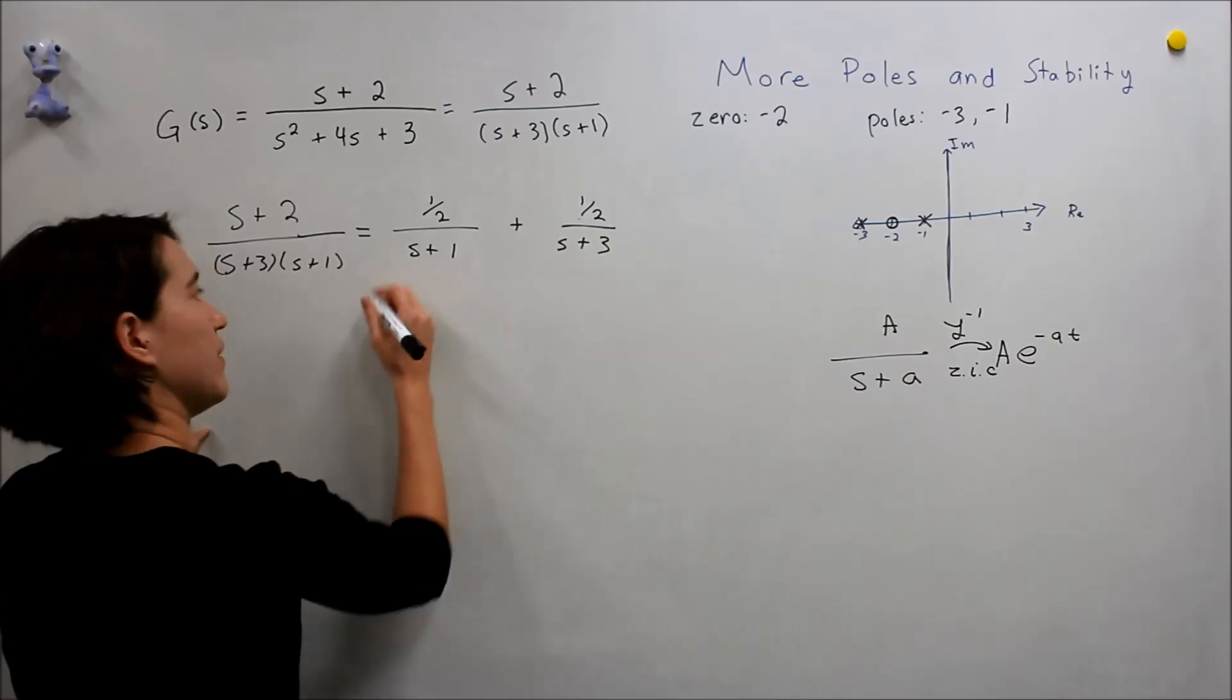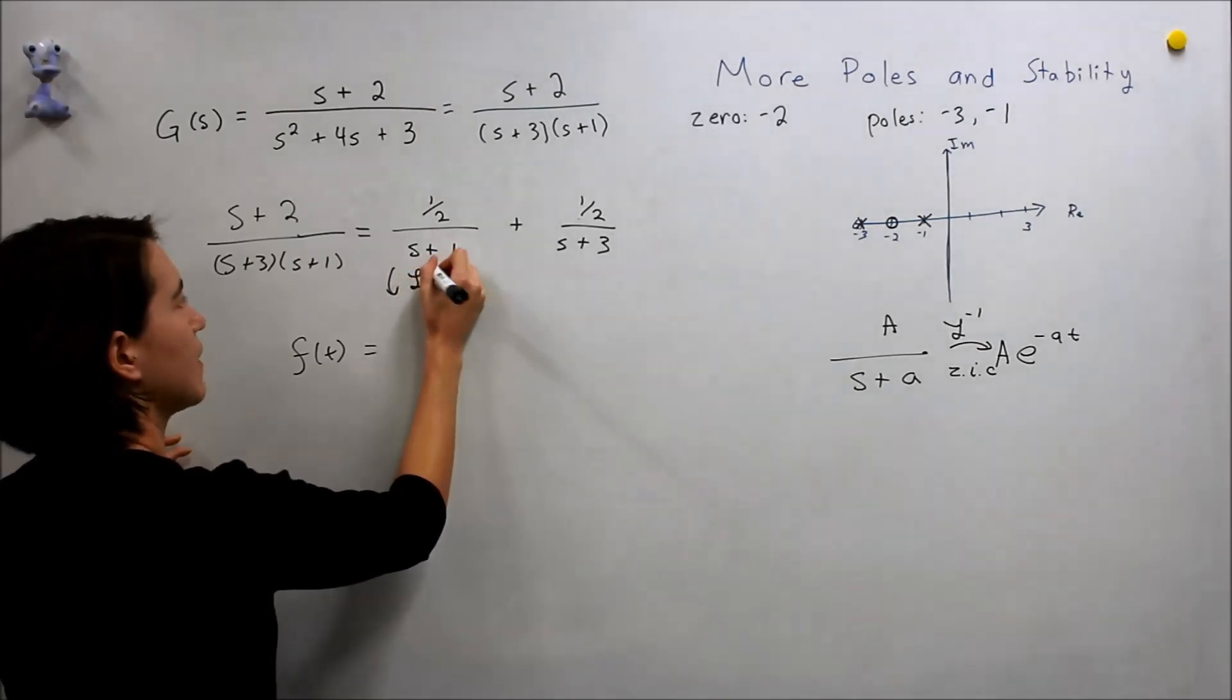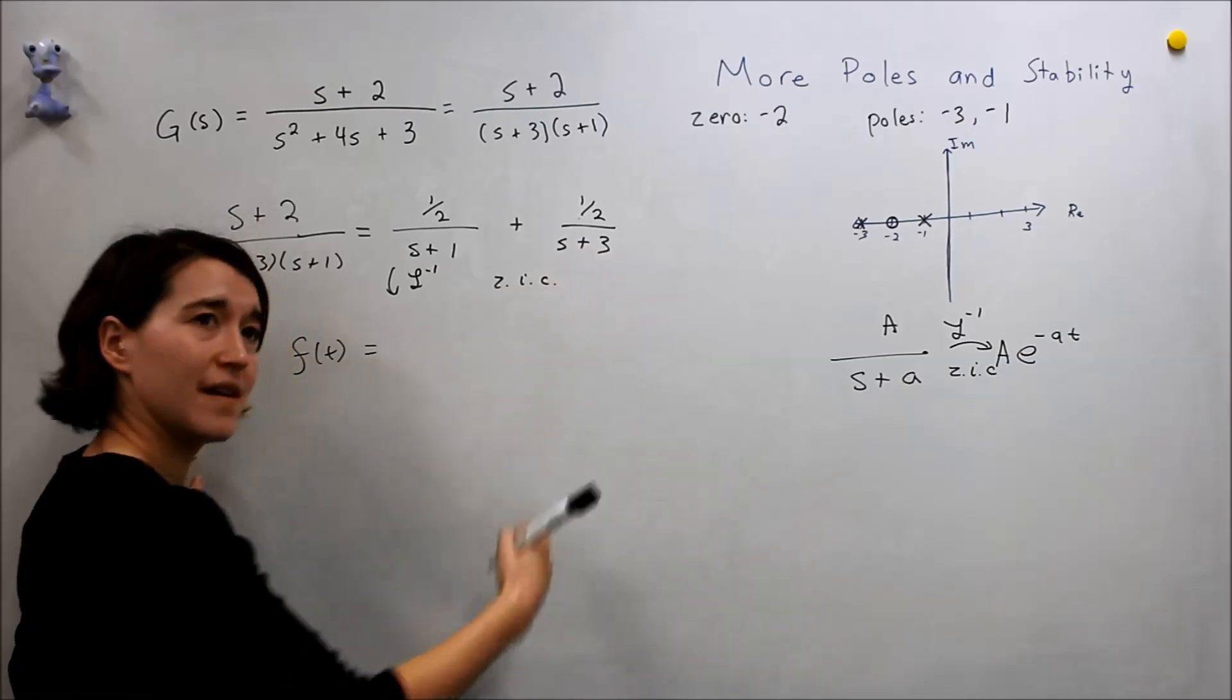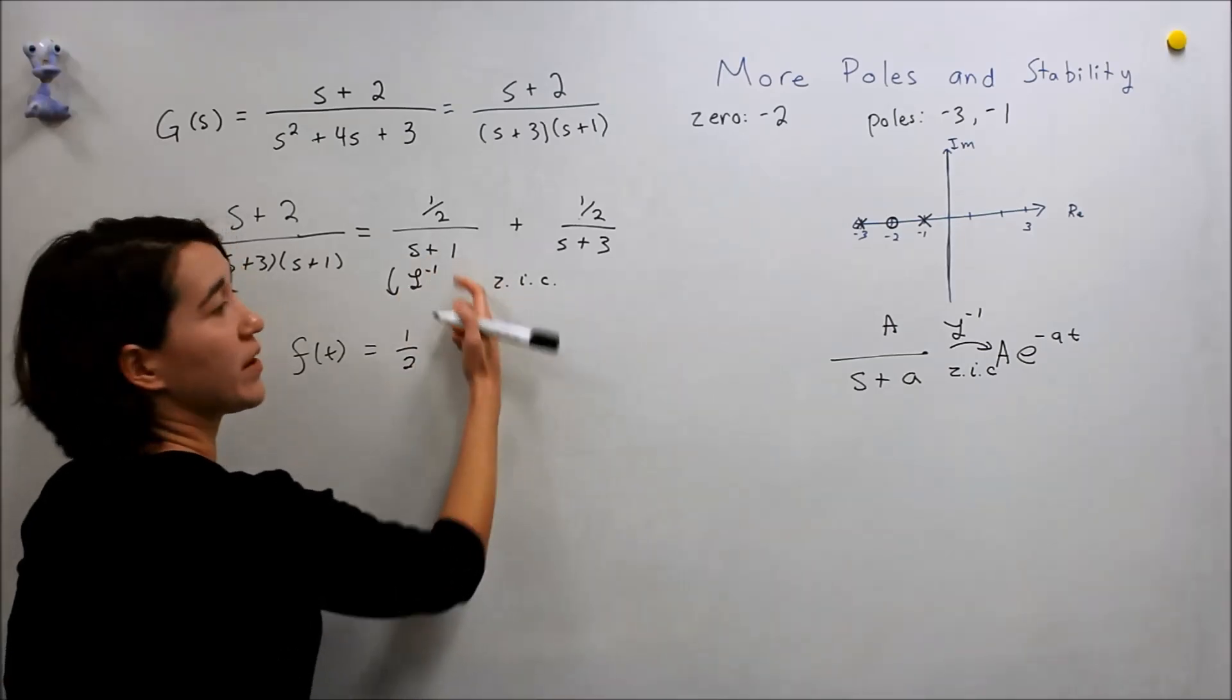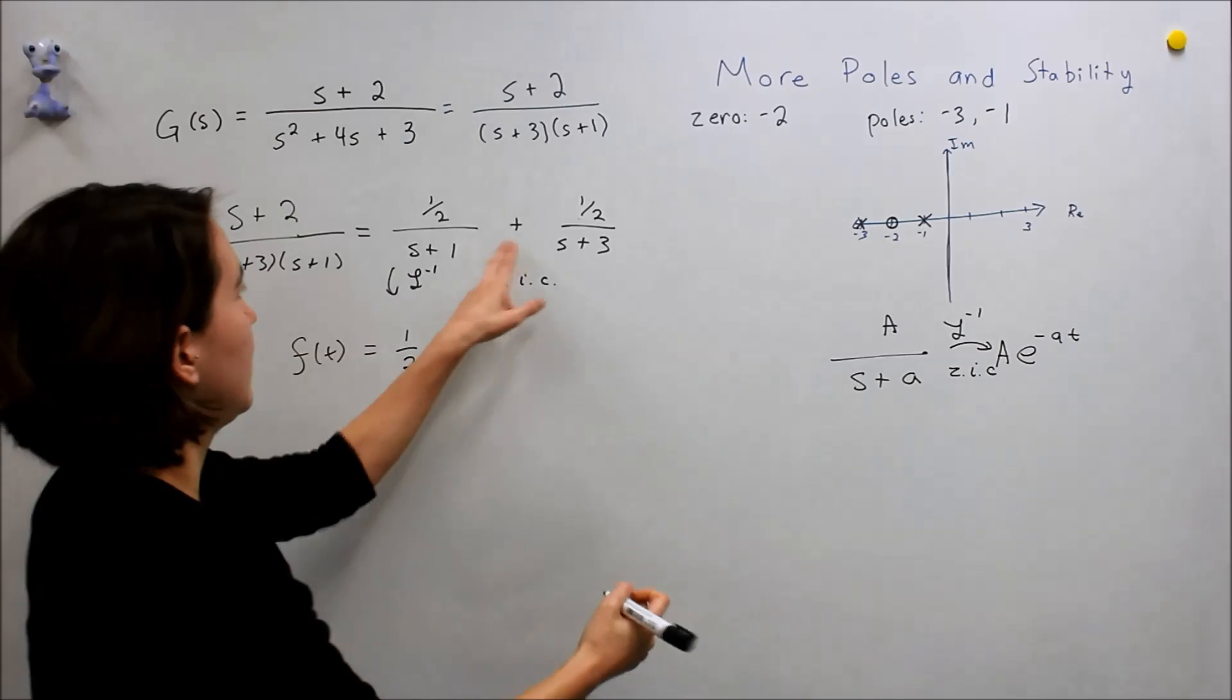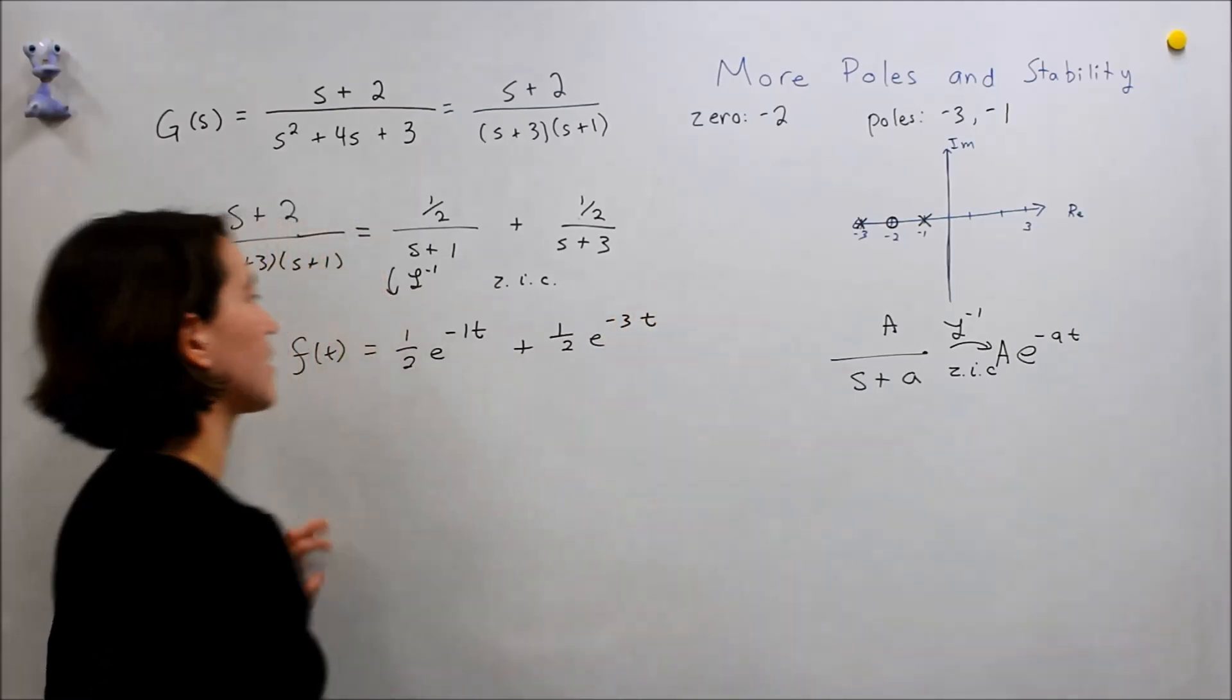We see that this is in the same form. So we can do the same thing here. We're going to call this f of t. We're going to take the reverse Laplace and assume zero initial conditions. We can transform that here. We'll get 1 half. This time our a is 1, so e to the negative 1t, plus 1 half. This time it's negative 3, so it's going to be negative 3t here.